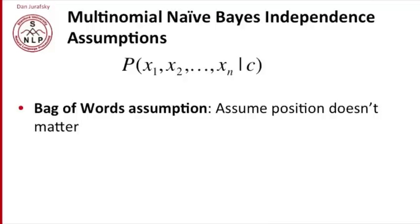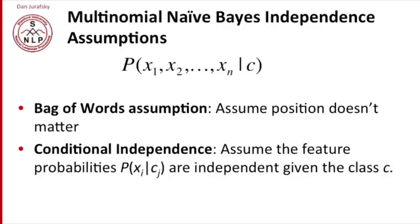So we're going to make some simplifying assumptions in the Naive Bayes classifier. The first is the bag of words assumption: we assume that the position in the document doesn't matter. Whether a word is the first, seventh, or one-hundred-and-fiftieth word is irrelevant — all we care about is which word or feature occurs. The second assumption is that the different features x1, x2, x3 are conditionally independent given the class. Both of these assumptions are incorrect — they're absolutely wrong — but by making them, we make our problem so much simpler that in practice we can solve it with a high degree of accuracy.